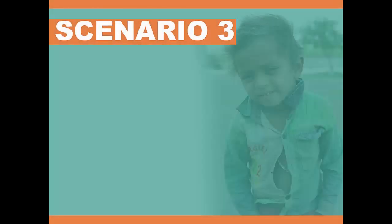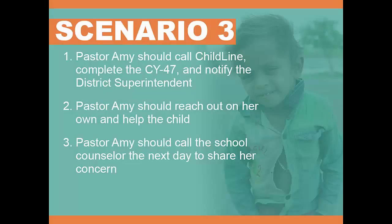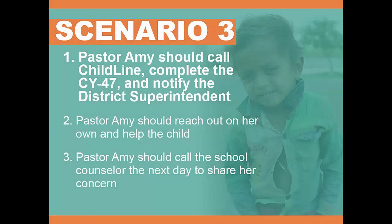Scenario 3: Pastor Amy notices that once again Kelly has come to church with dirty clothes. This is the latest in a series of events, including previous observations of Kelly always saying she doesn't have food at home and seeing an apparent lack of dental care. Pastor Amy is aware of several parishioners' attempts to intervene and provide some support and assistance to the family to no avail. What should happen? Option 1: Pastor Amy should immediately contact Childline, complete a CY47 report for the county where the abuse is observed, and contact her district superintendent regarding the incident. Option 2: Pastor Amy should attempt to reach out on her own and help the child. Option 3: The next day, Pastor Amy should call Kelly's school counselor, sharing her observations and seeing what the counselor recommends. Option 1 is correct.